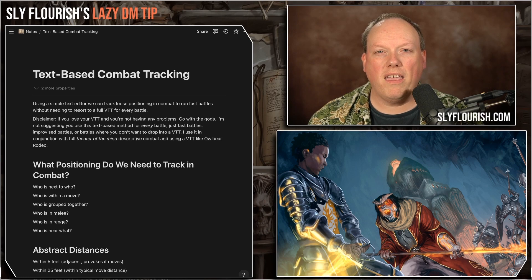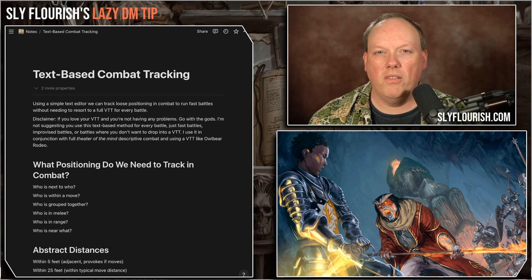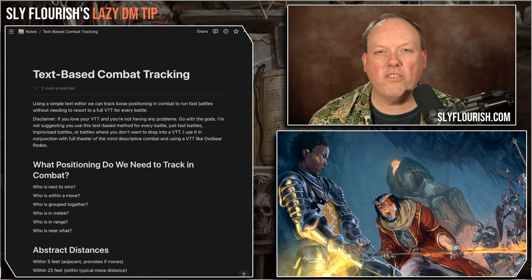Today I'm going to offer a solution for tracking combat positioning in D&D using just a text editor when you're running your D&D games online. Most of the time when we think about tracking positioning in combat for D&D online, we think about virtual tabletops like Roll20, Fantasy Grounds, Foundry, or Owlbear Rodeo. But there's actually a way to track combat positioning using just the text chat feature of whatever tool we're using to talk to our players.